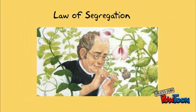The law of segregation states that when gametes, either egg or sperm, are formed, the two factors in the parent cell are divided into separate gamete cells.